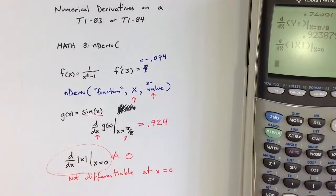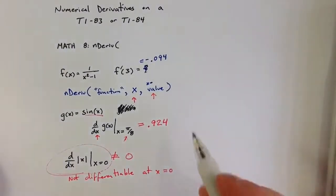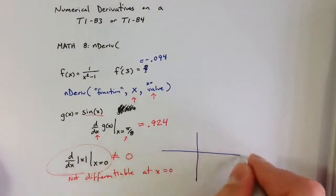For the absolute value function at x equals 0, we get a cusp.